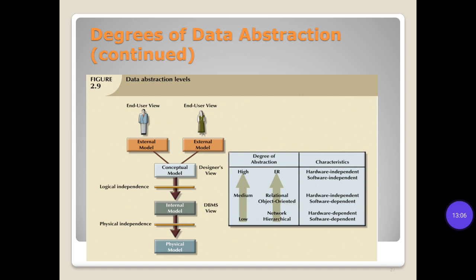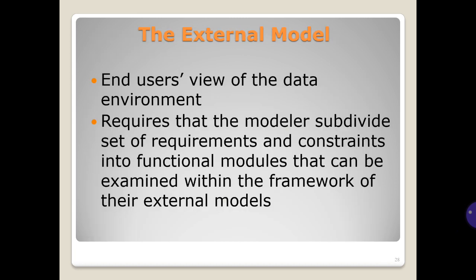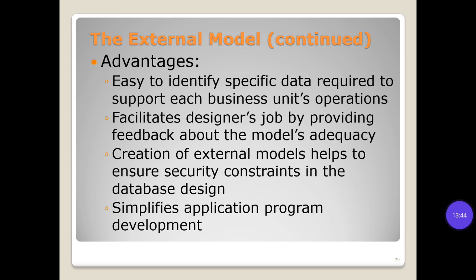The degrees of data abstraction hierarchy: End-user view — External model; then Conceptual model; then Internal model; and Physical model. The External model represents the end user's view of the data environment. It requires that the models subdivide a set of requirements and constraints into functional models that can be examined within the framework of their external models.